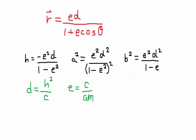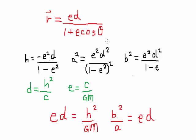If we now remember back to the substitutions we made to get our original equation, we defined d as h squared over c and e as c over GM, where G and m are the gravitational constant and the mass of the sun respectively. So we can easily see that e times d is equal to h squared over GM, and we can see that b squared over a is equal to ed. So we can say that h squared over GM is equal to b squared over a, which we will use to further simplify our expression for the period of the orbit.